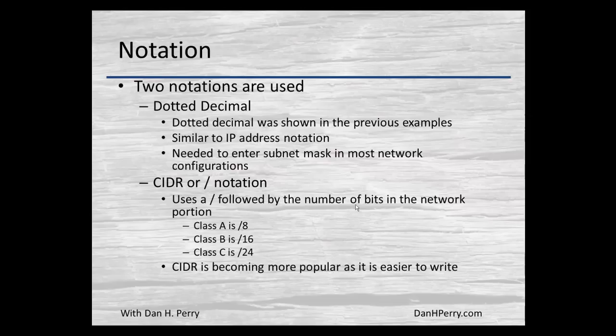There are two notations we see with subnet masks. One is dotted decimal notation — you'd have the IP address and then the subnet mask using the same notation as the IP address, starting with ones in the bit positions. This is the way you enter your subnet mask on a Windows machine, and it's probably still the most used.